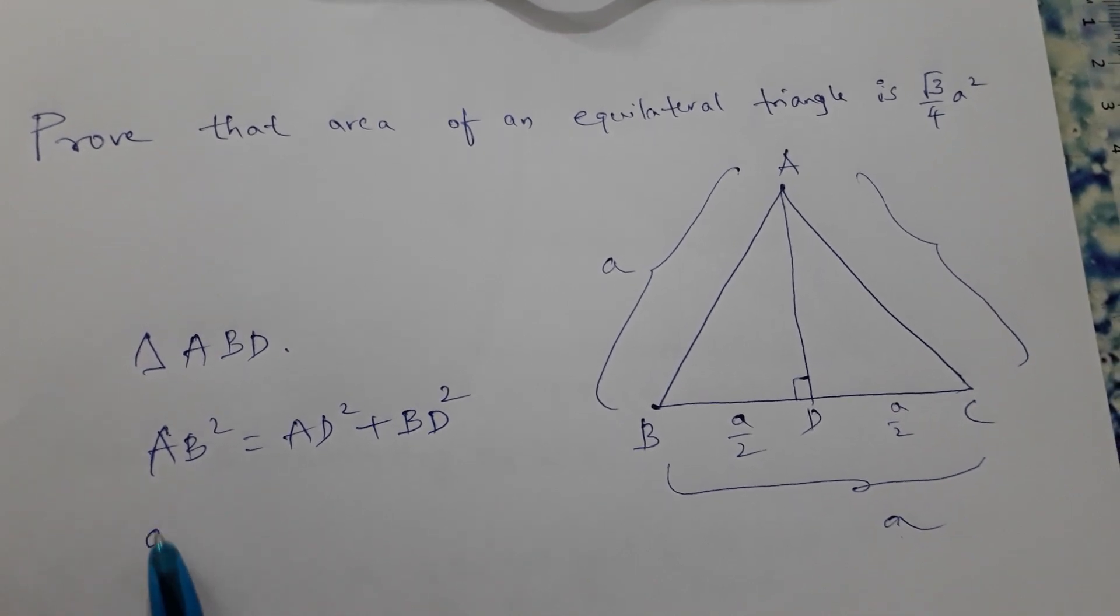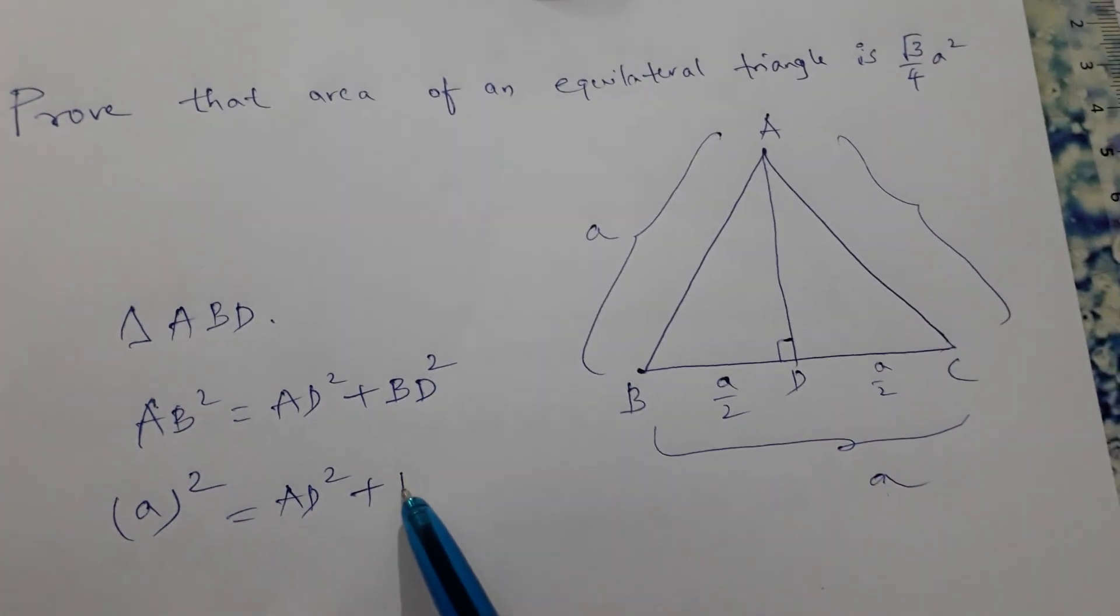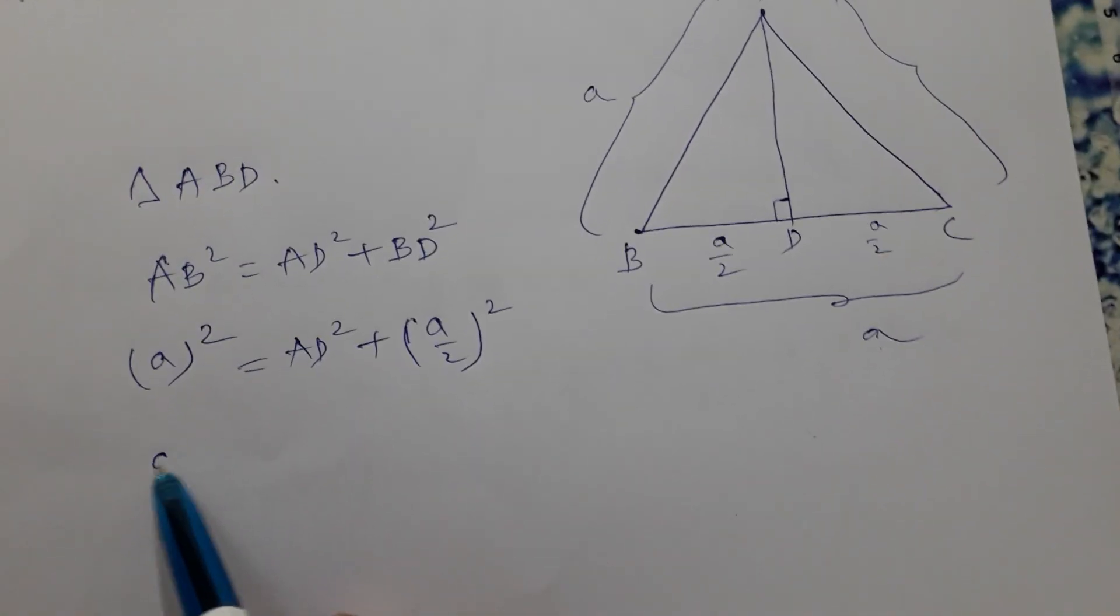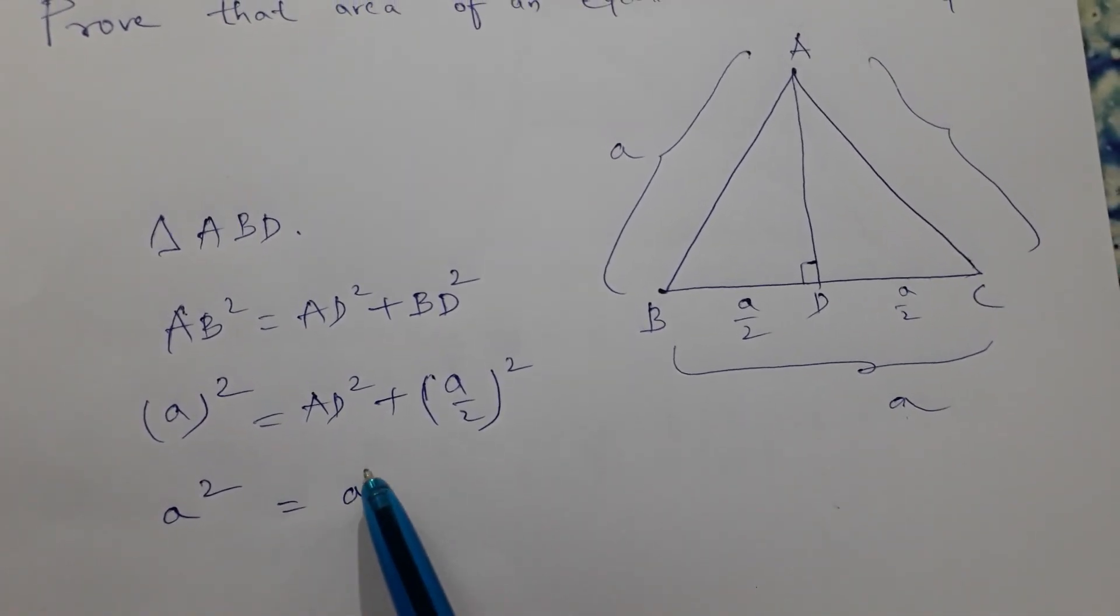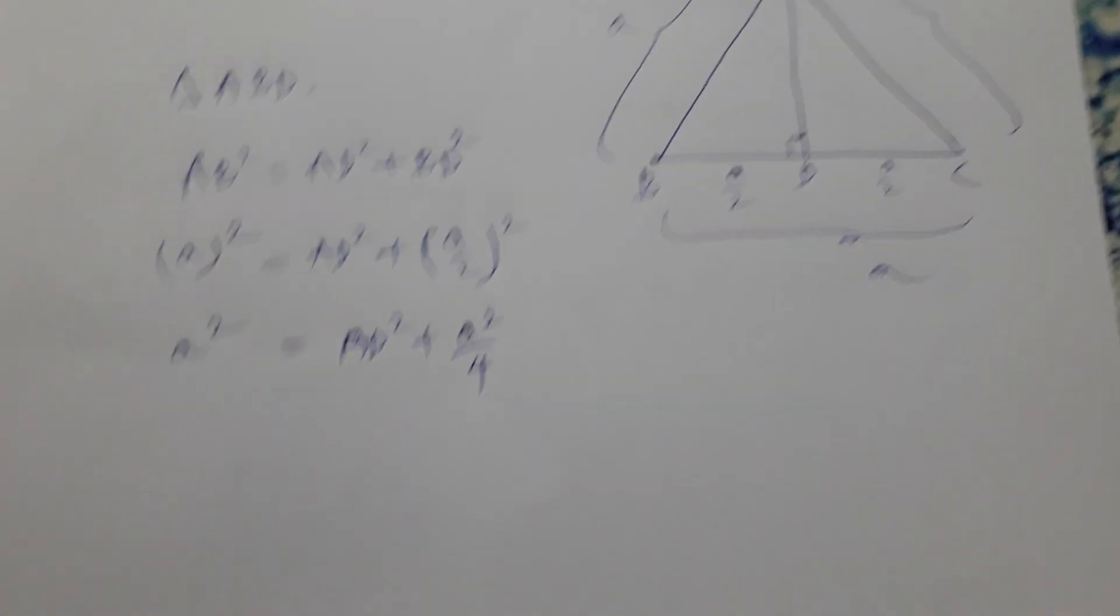So AB squared equals AD squared plus BD squared. BD is A by 2 whole squared. So A squared equals AD squared plus A squared by 4.